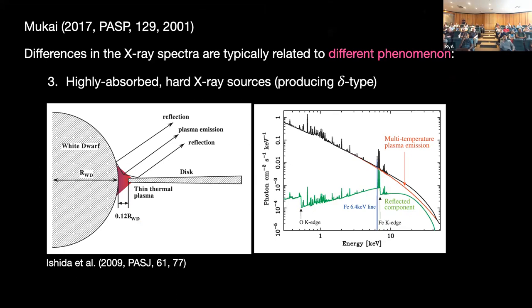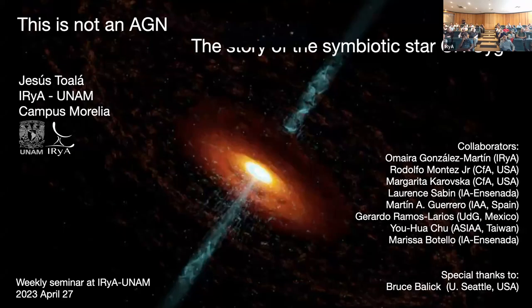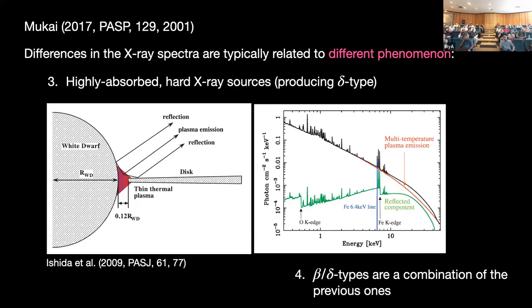After accounting for the self-extinction and the galactic extinction, all of these soft emissions are absorbed and you produce something like this. These are just model scenarios. The delta types are just a combination of what we see in these sources.